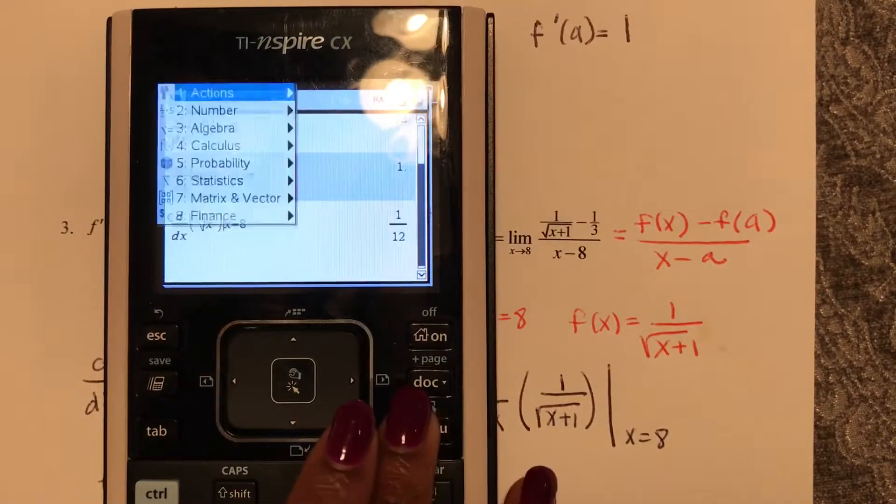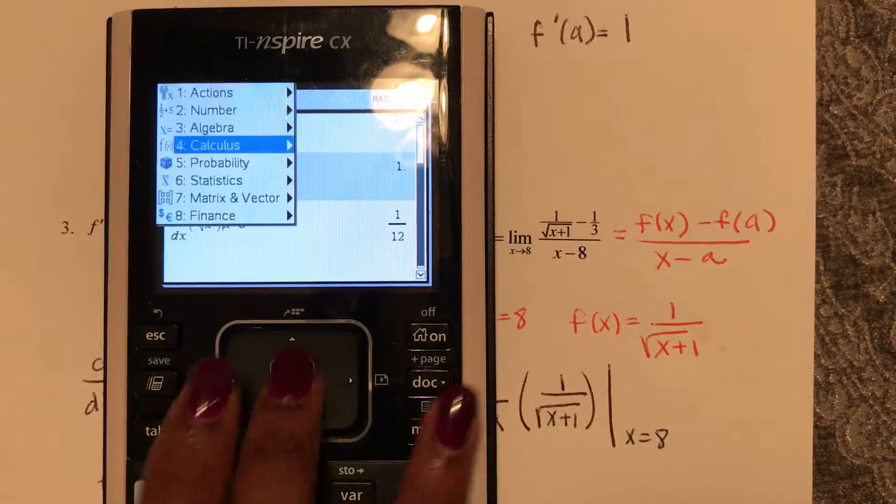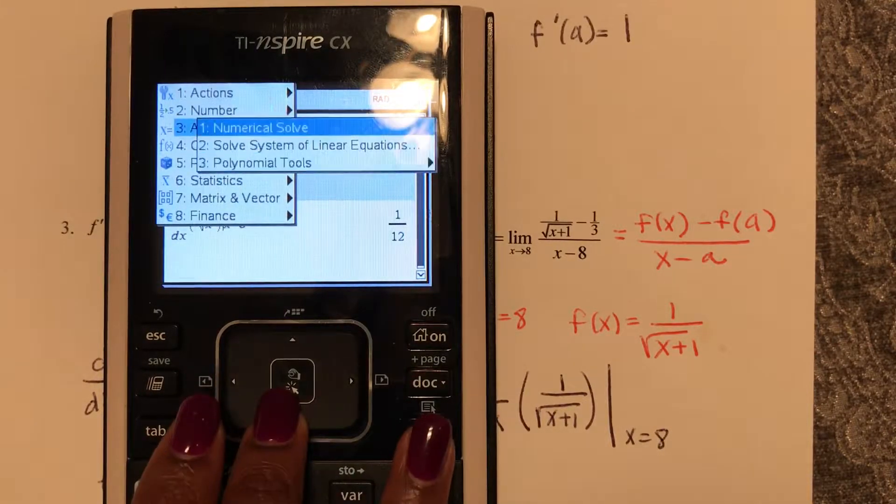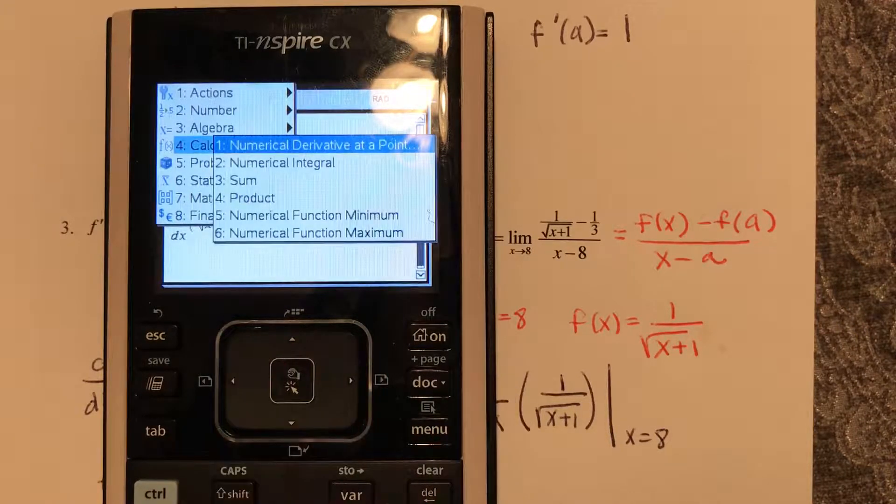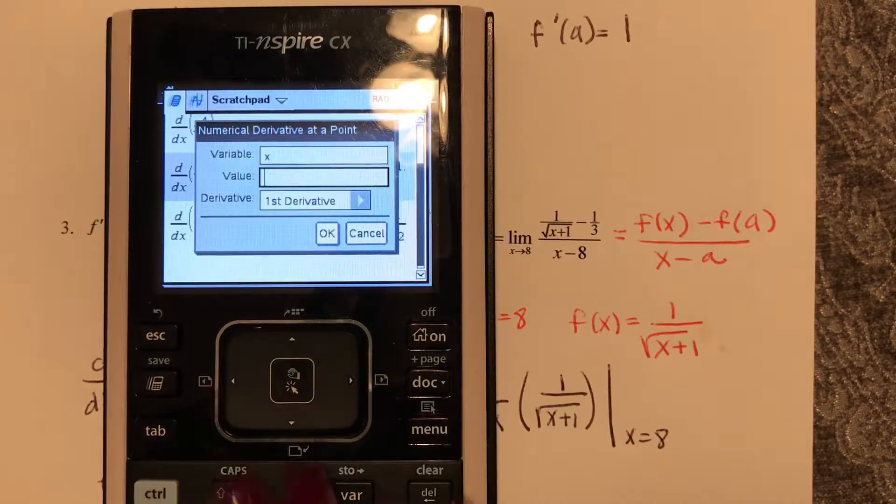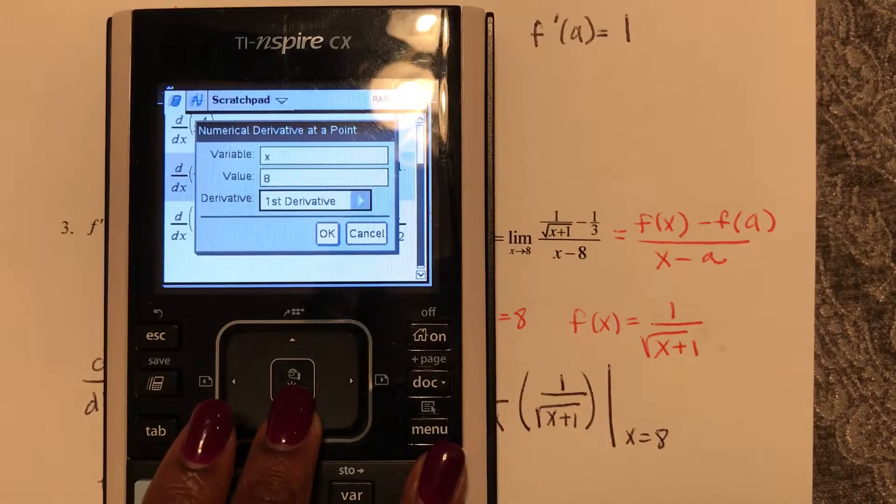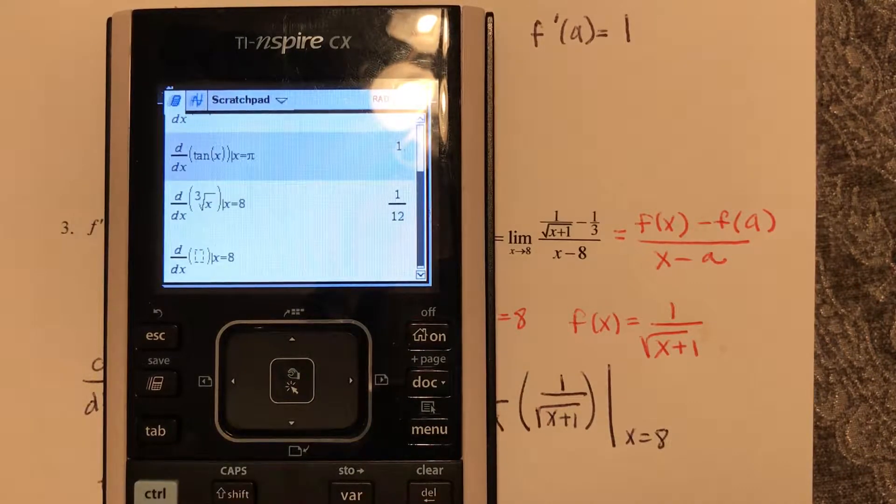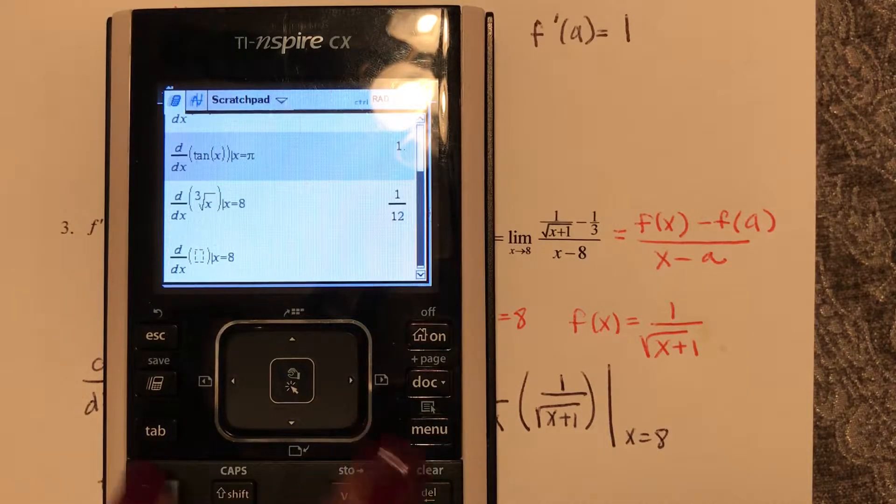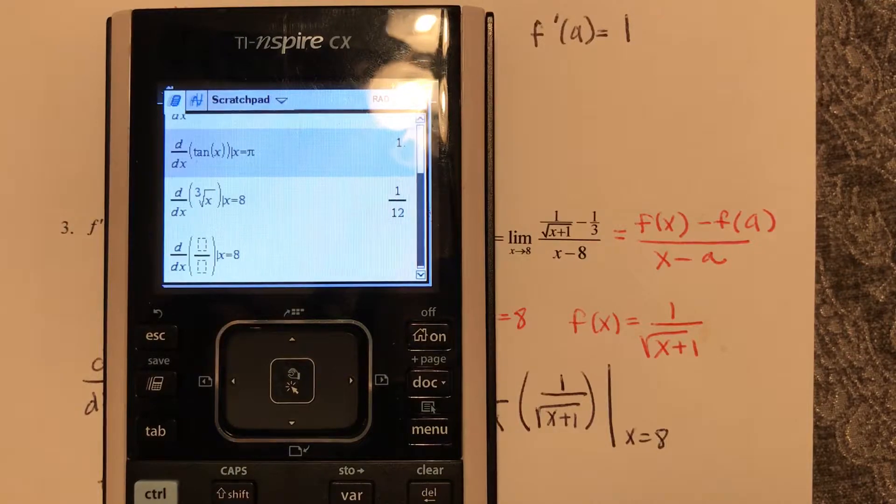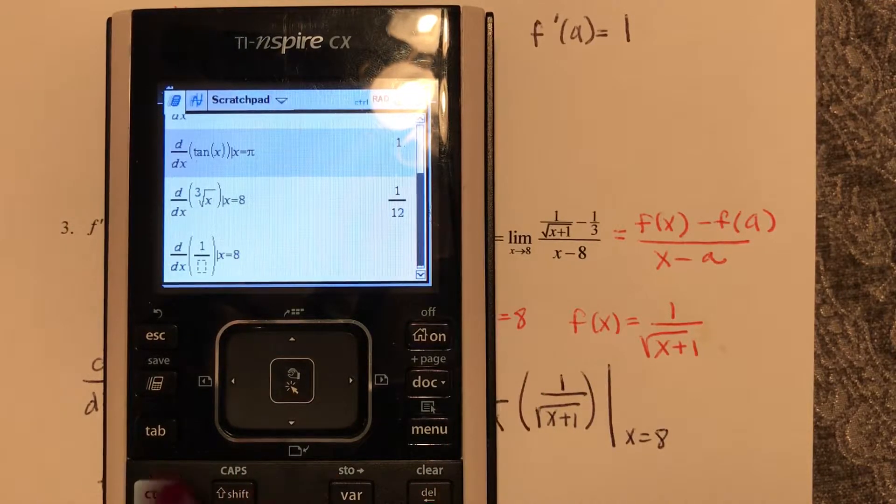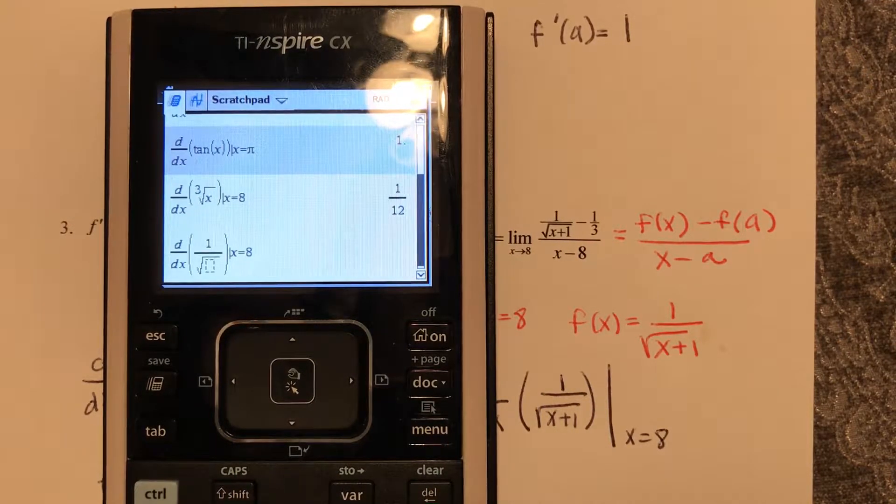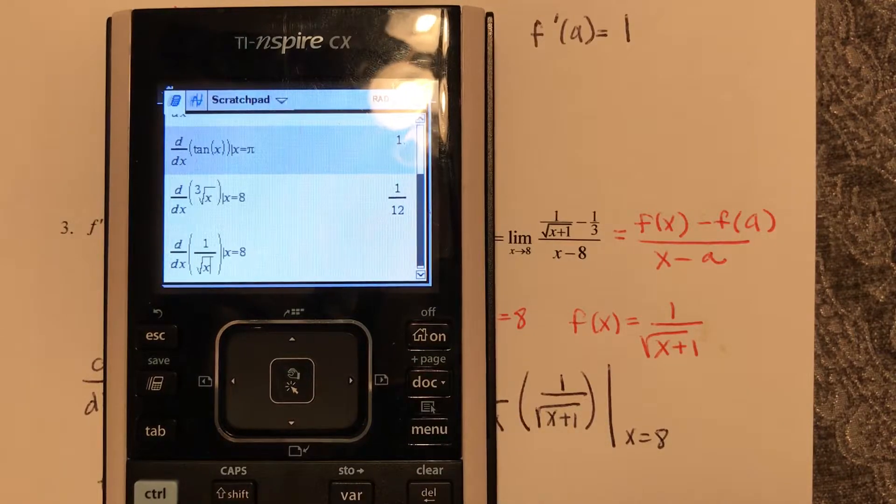So menu down to calculus, down to calculus, finding the derivative at a point. The value is eight and our function is, throw in a fraction, one over square root x plus one.